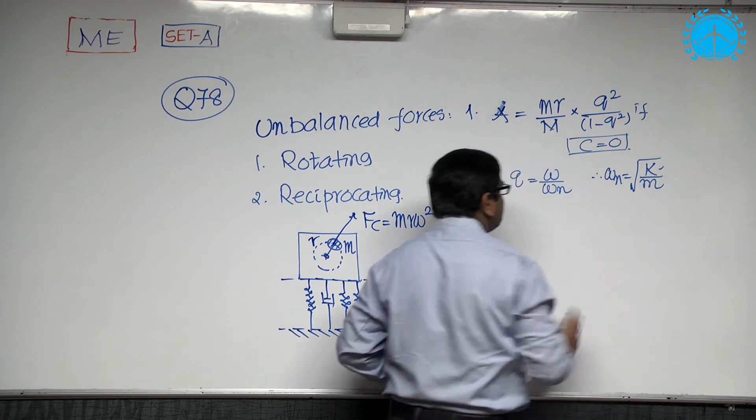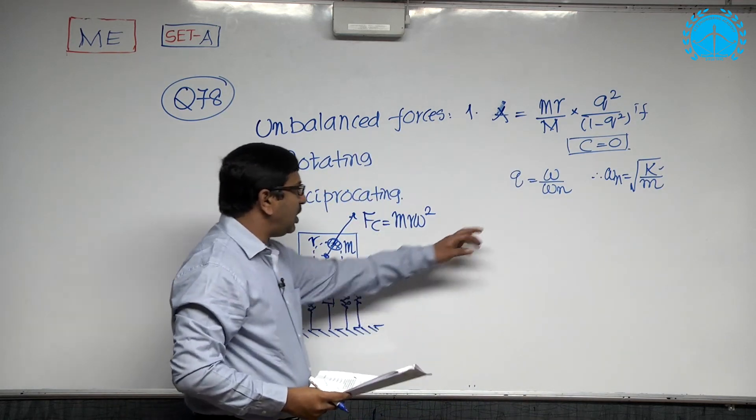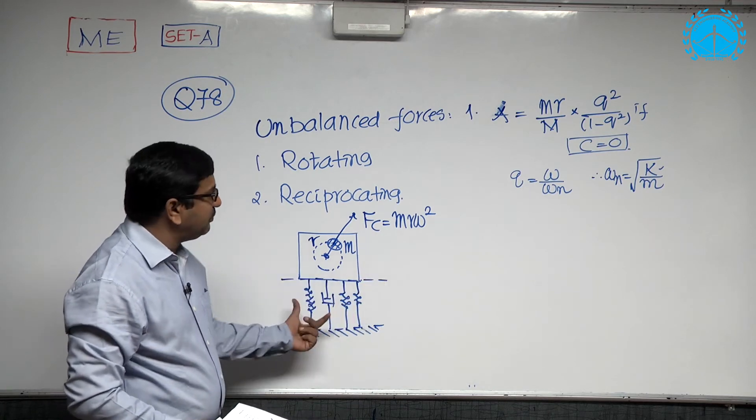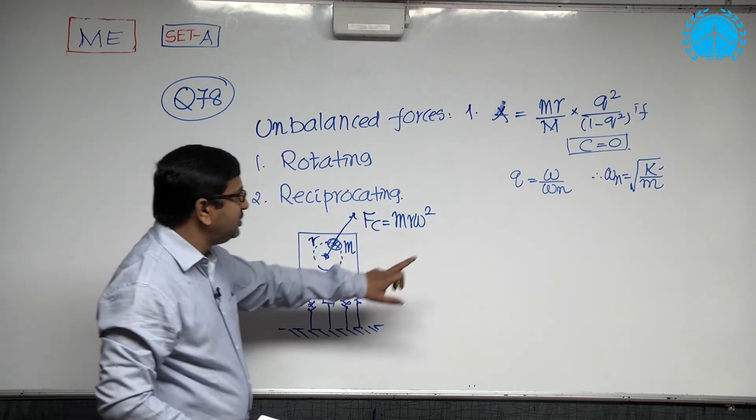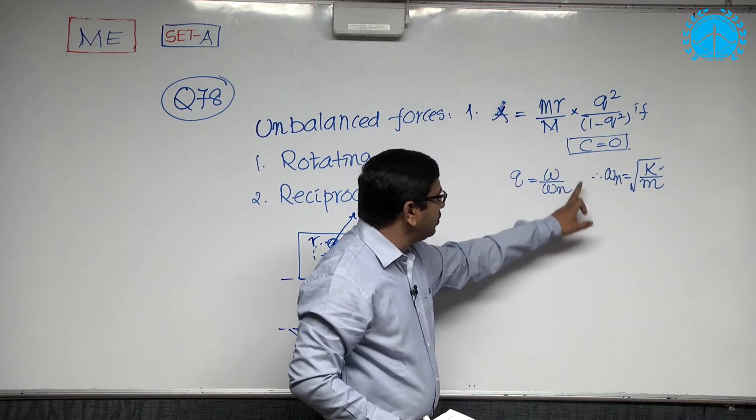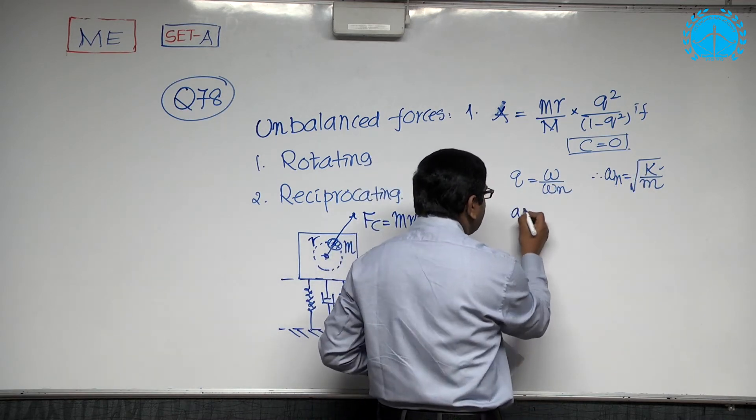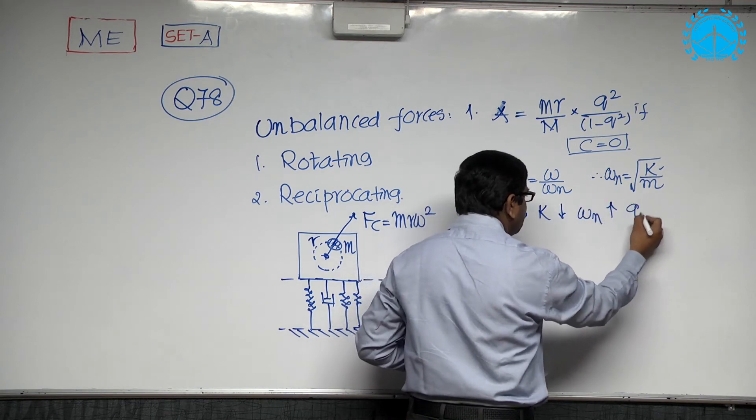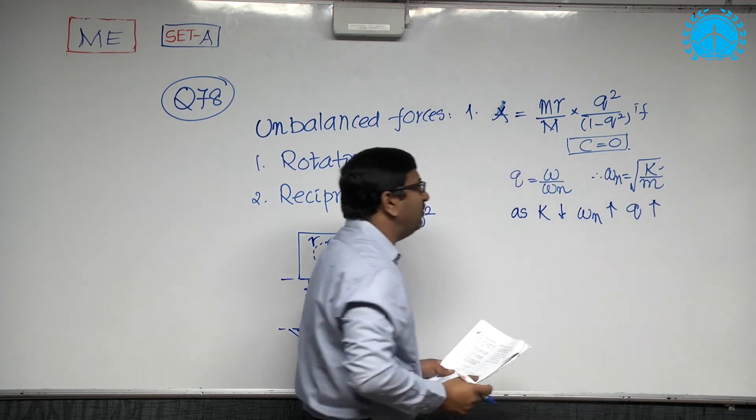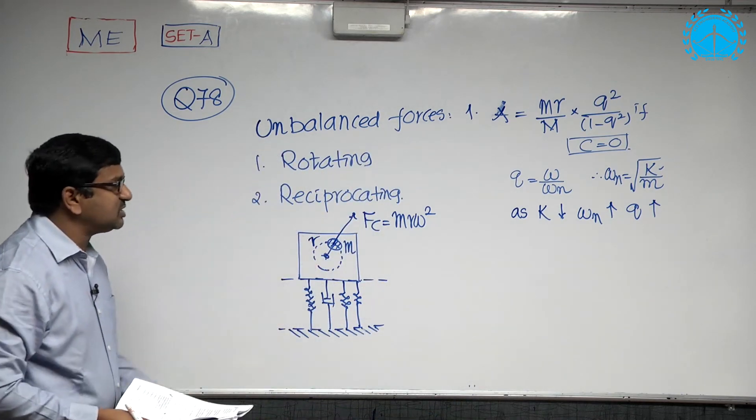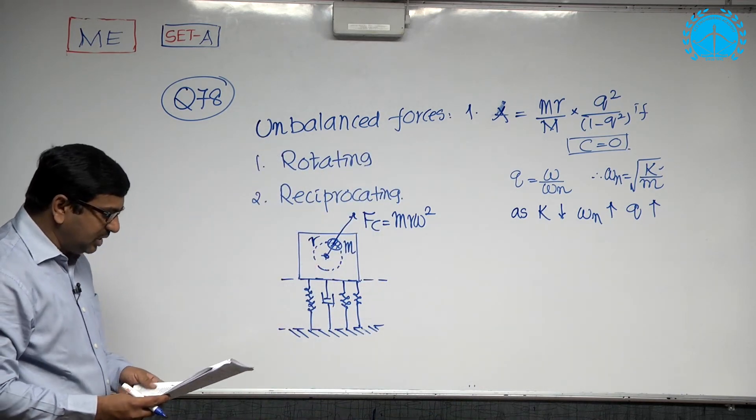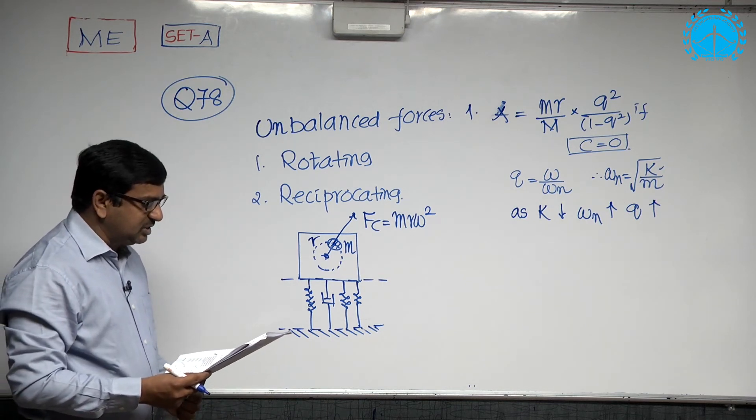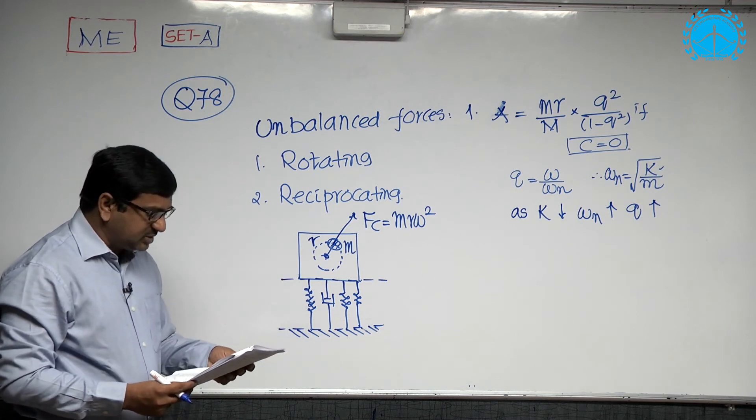Omega n stands for the stiffness of the spring k by m. As stiffness increases, or if you put it on a spring from a rigid foundation, the stiffness reduces. When stiffness reduces, omega n reduces. When omega n reduces, the q value increases. Once q value increases, it becomes into a stable zone. The first statement of mounting the machine on springs thereby minimizing the transmission of forces is a correct statement.